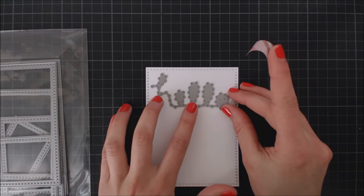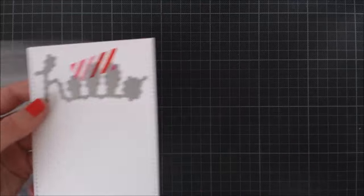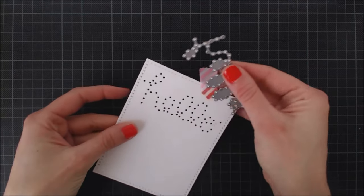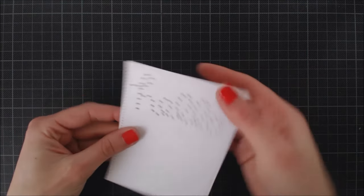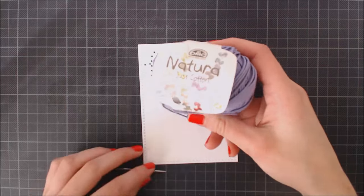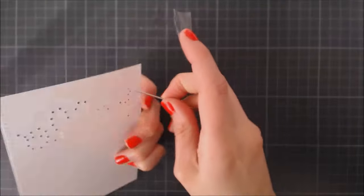I'm going to be using the embroidered Hello die as a guide to do my embroidering, so I secured it with some washi tape and ran it through my cutting machine. Now I have a perfect guide to start my embroidering.